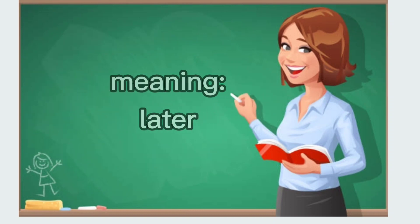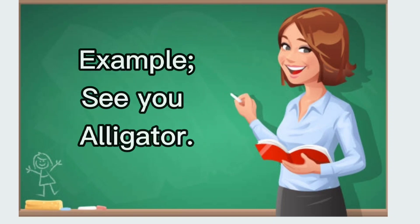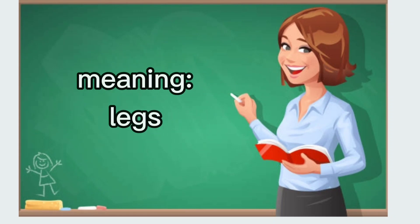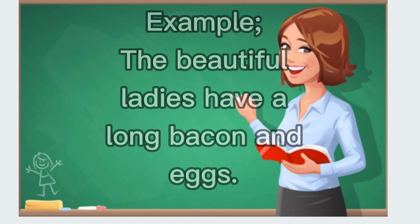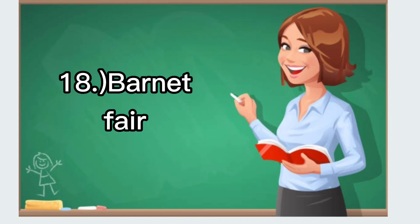Sixteen: alligator, meaning later. Example: see you alligator. Seventeen: bacon and eggs, meaning legs. Example: the beautiful ladies have long bacon and eggs.